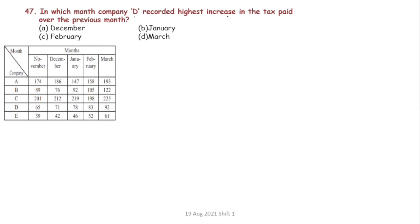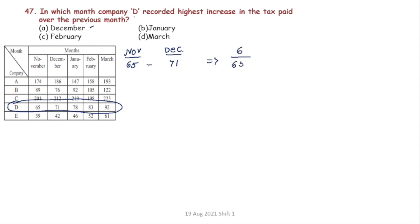Next question: in which month did Company D record the highest percentage increase in tax paid over the previous month? Company D values — December is 71; comparing to November which is 65, the increase is 6. So 6 divided by 65 into 100 gives 9.2%. That is the December figure.